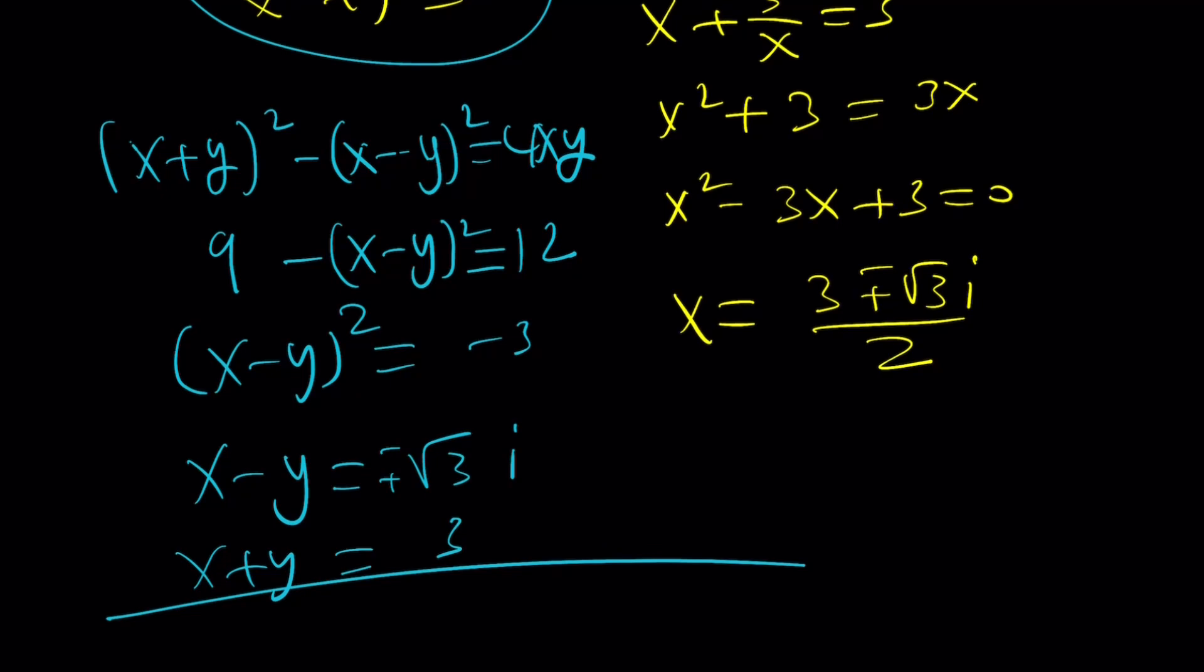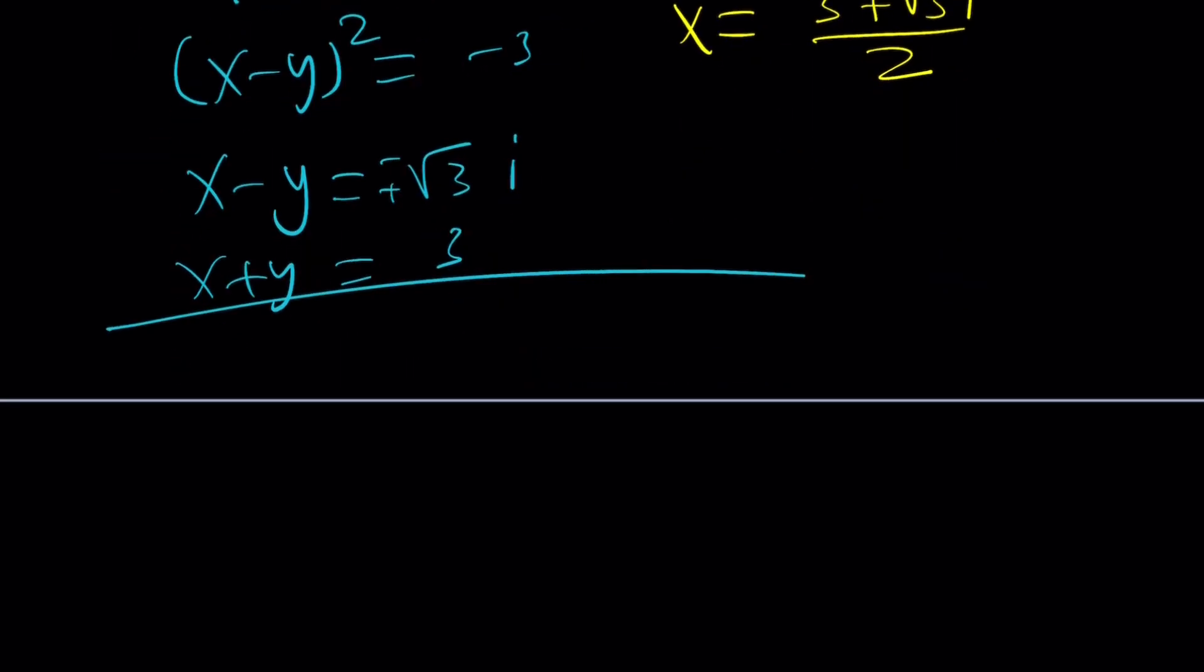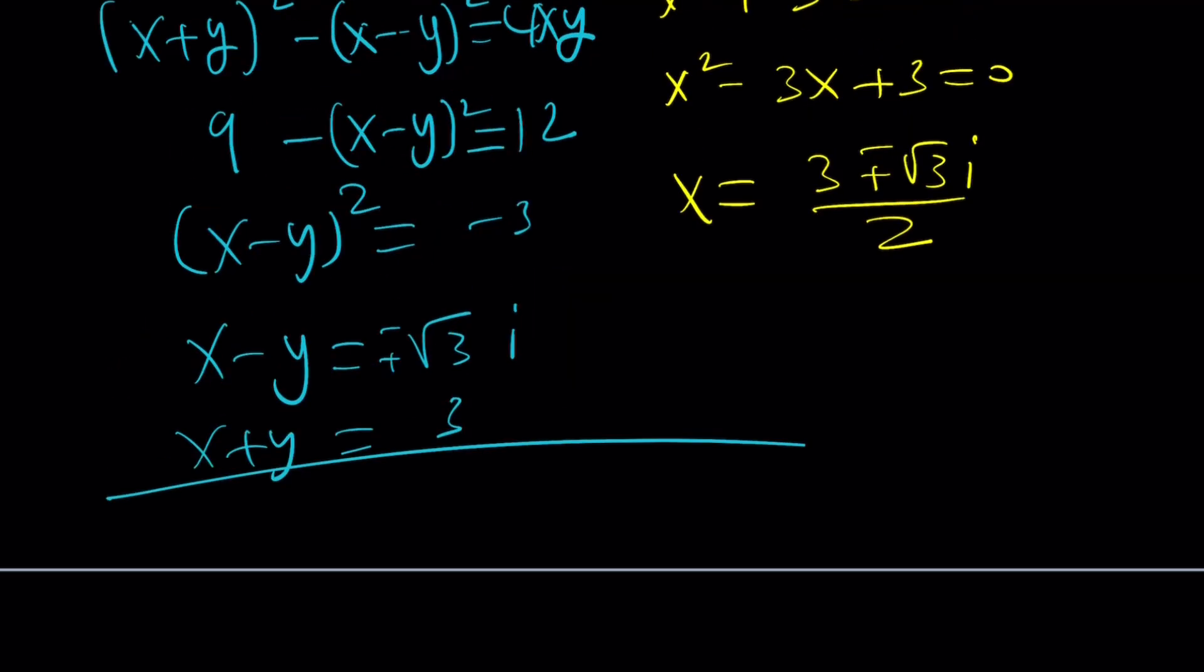And I know that x plus y is equal to 3. And if you add these, divide by 2, you're going to get the x. Otherwise, you're going to get the y. Make sense? It brings us basically to the exact same point.